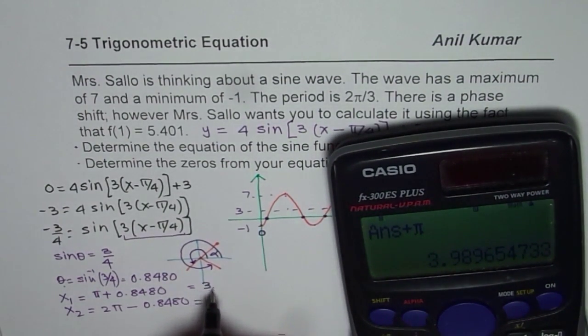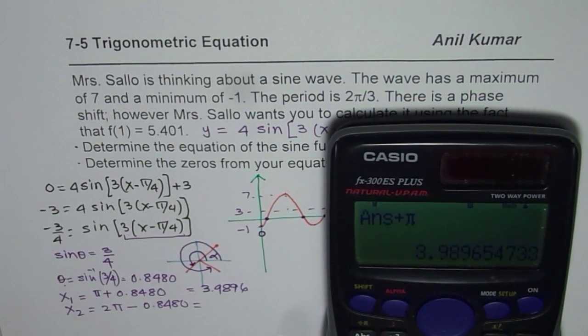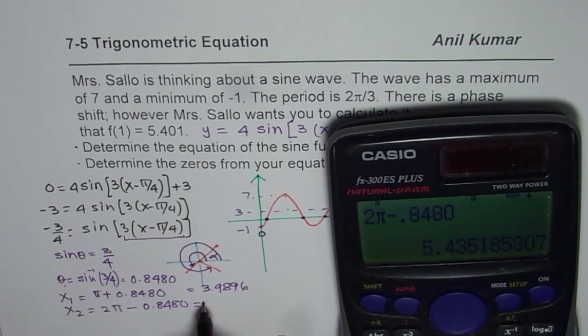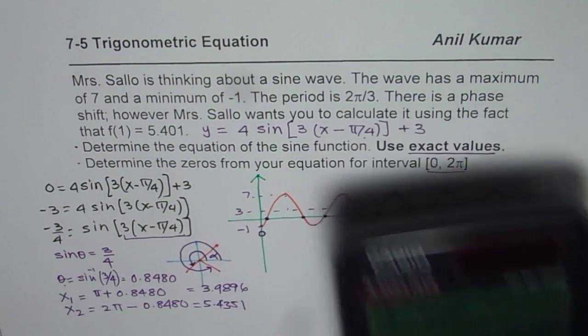And the other one is 2 times π minus 0.8480, so that gives us 5.4351. So we get two values.